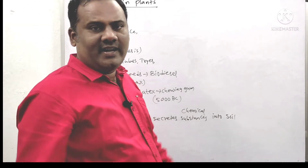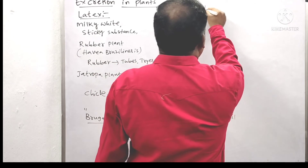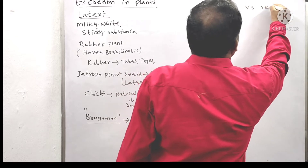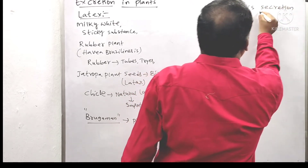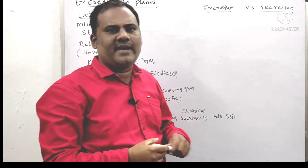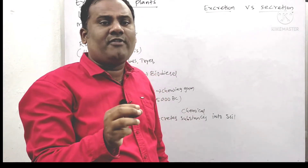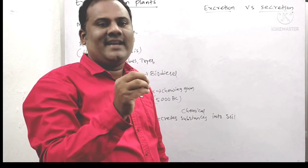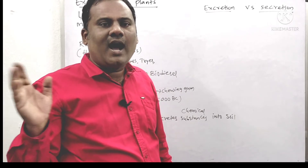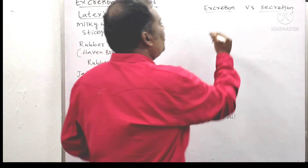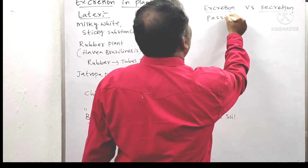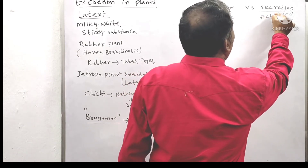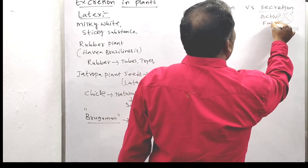This is about Brugman's investigations. Next, excretion versus secretion. Actually, both are processes useful for the movement of substances in living organisms to send them out. But there is a slight difference: excretion is a passive process — it is a very slow process — whereas secretion is an active process, meaning it is a very fast process.